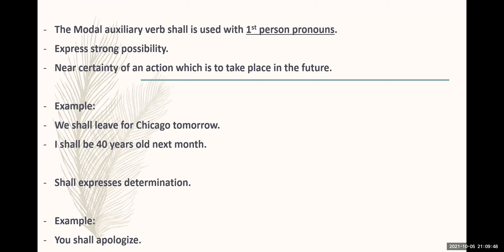When the modal auxiliary verb shall comes with first person, it shows a strong possibility and certainty of an action that happens in the future. Certainty and possibility with first person. Examples: We shall leave for Chicago tomorrow. I shall be 40 years old next month. Shall also expresses determination when you're determined about something and want the other person to do it or you have to do it yourself. You shall apologize.